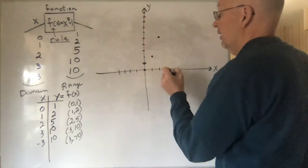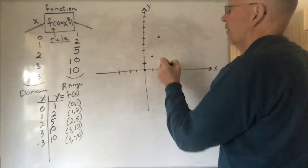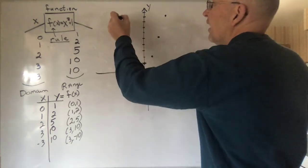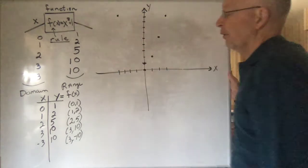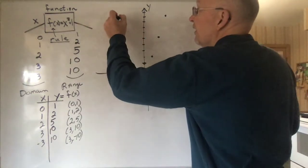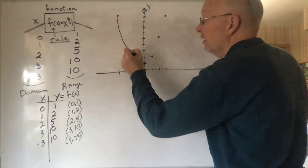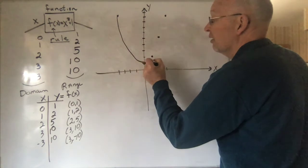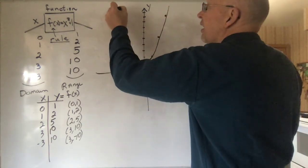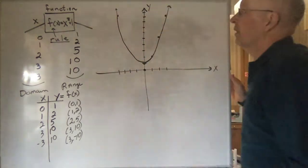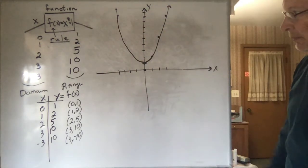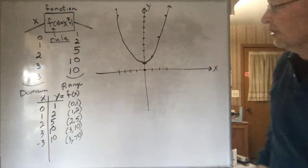Here's the (3, 10). Here's (-3, 10). And if you plot lots of other points as well, you'll see that the graph of this function looks something like that. And you put little arrows on there to indicate it'll just keep going up. And so, there's the graph of this function.